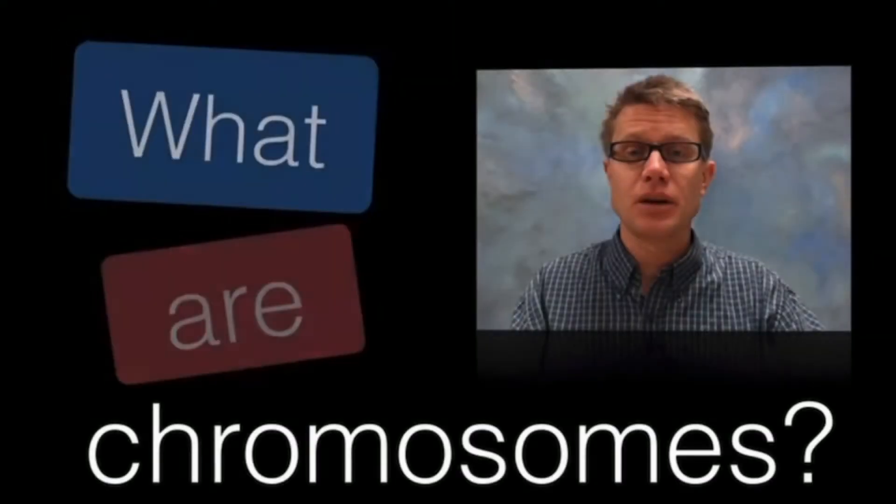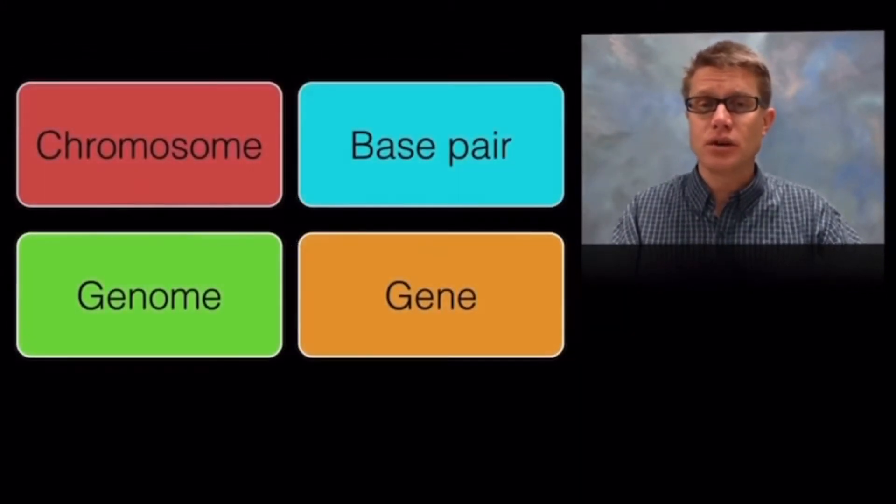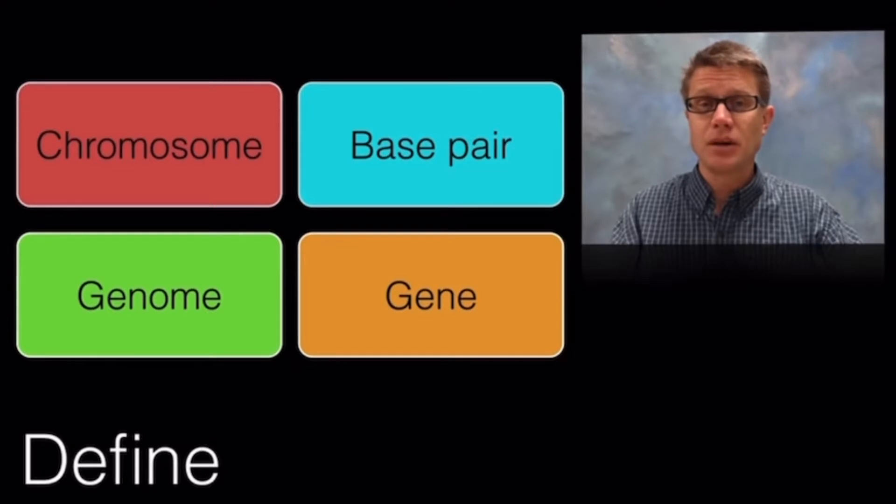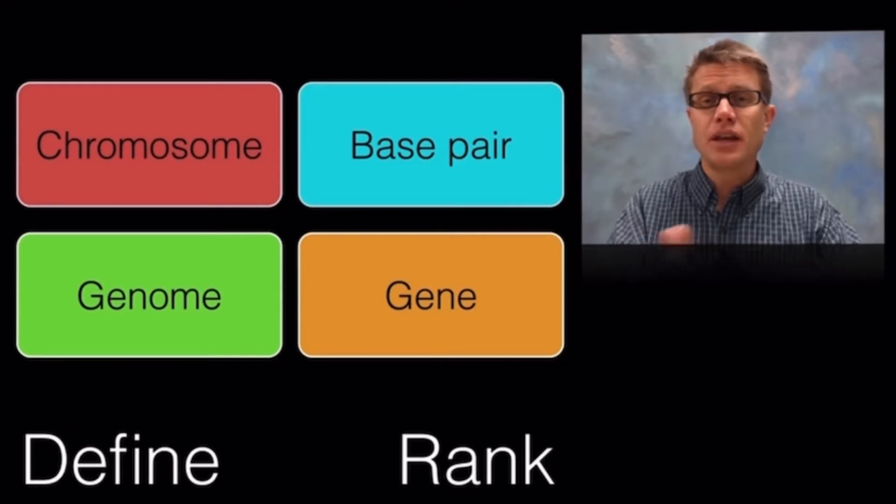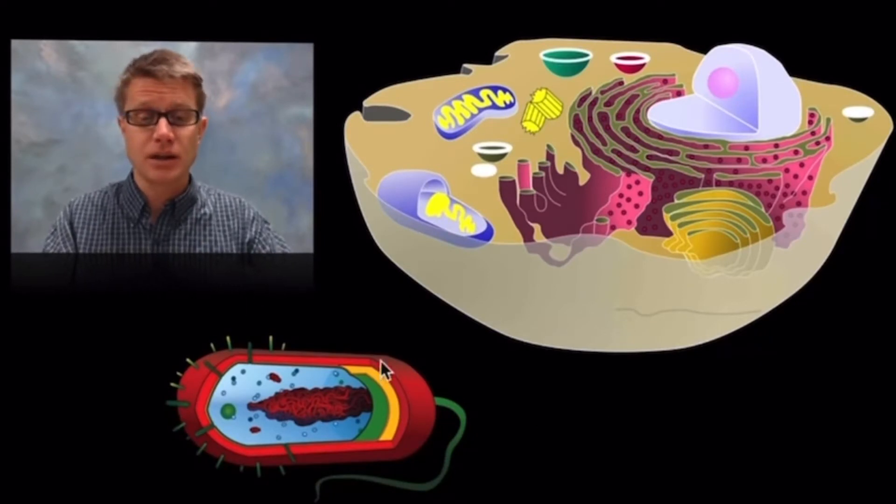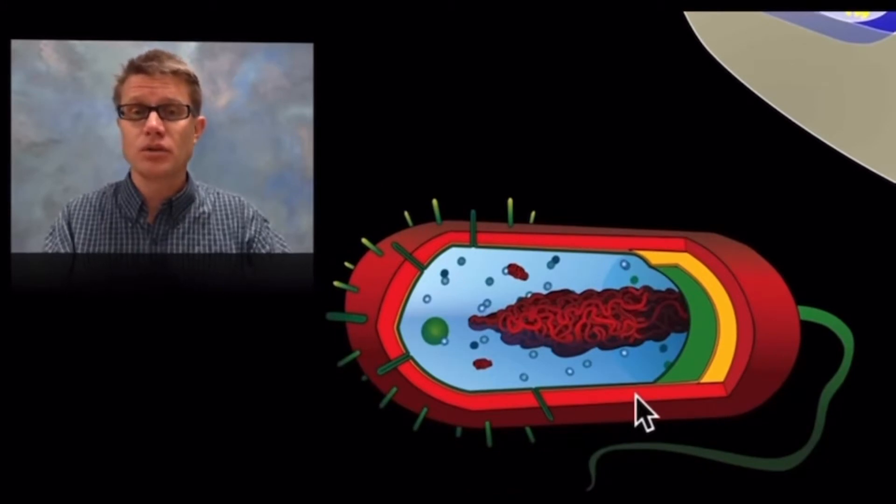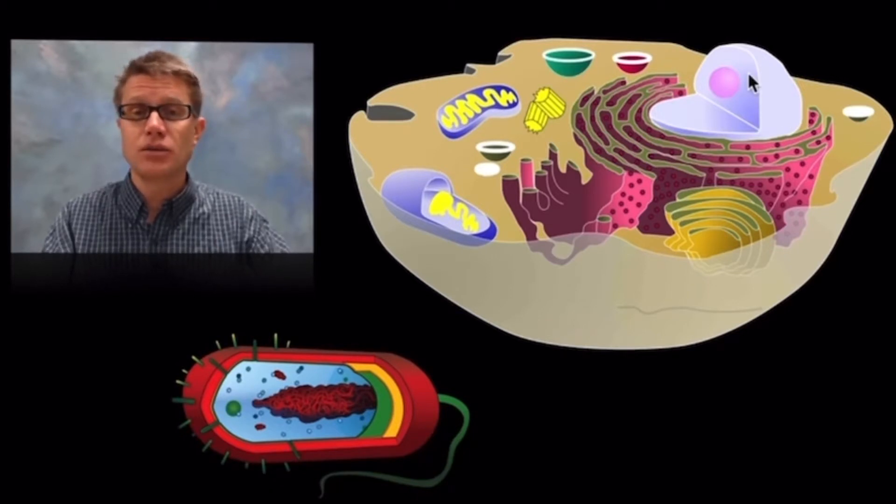In this short video we're going to answer this question: what are chromosomes? Let's begin with a pre-quiz. Could you take these four terms—chromosome, base pair, genome, and gene—and could you define them, and then rank them in order from the largest to the smallest? There are different types of cells. In a prokaryotic cell like a bacteria, they really only have one chromosome. It's going to be one loop of DNA bound tightly in what's called the nucleoid region on the inside of that cell.